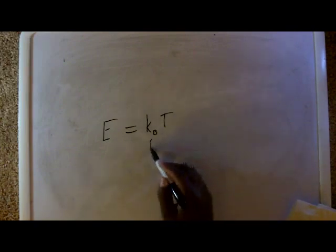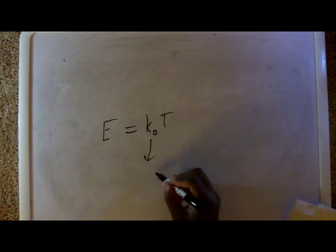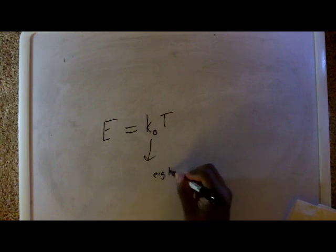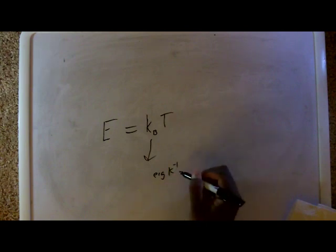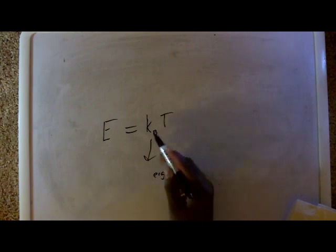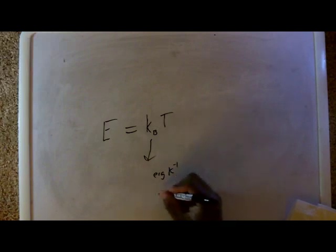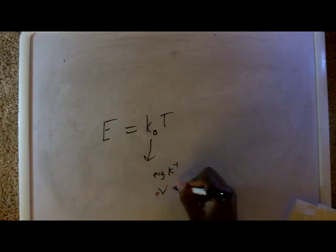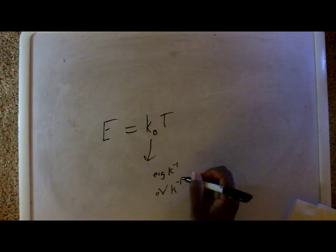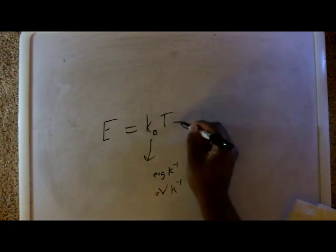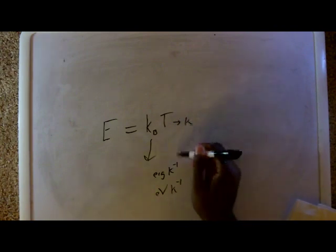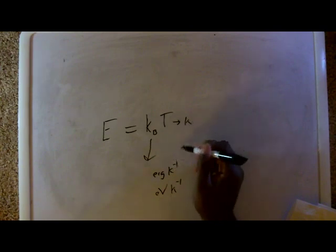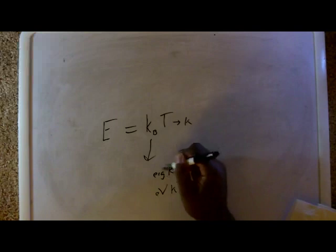But the Boltzmann constant is either Ergs over Kelvin. This K is not that K. Or it's electron volts over Kelvin. So, and this temperature is in Kelvin. So as you see, this Kelvin, this label Kelvin is crossed out. The only thing that's left is the energy, the Ergs or the electron volts.